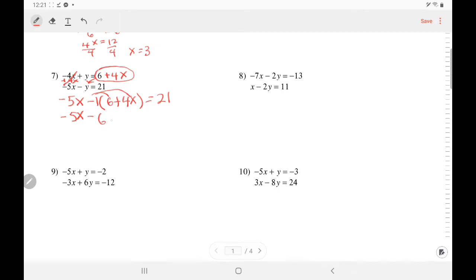So I have negative 6 minus 4x equals 21. My like terms are negative 5x and negative 4x. Add them. They became more negative. So negative 9x. I still have the minus 6 equals 21. Add 6. So negative 9x equals 27. Divide.